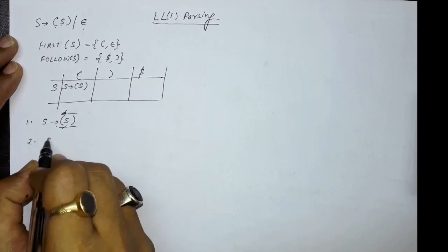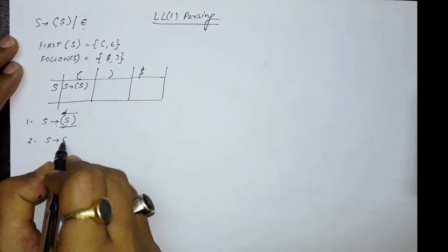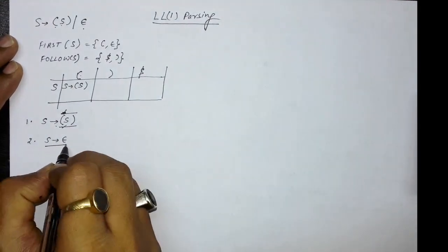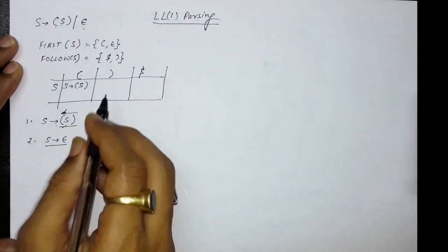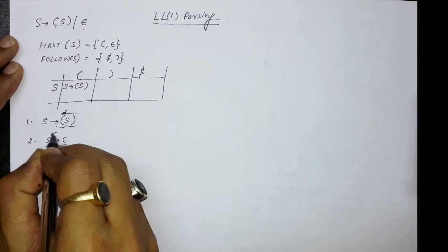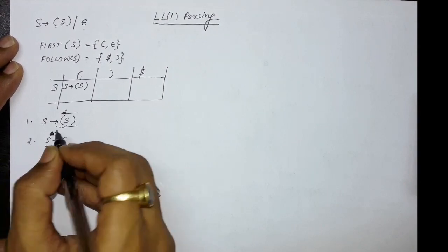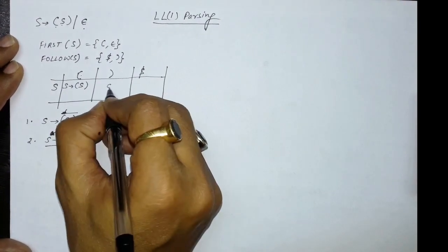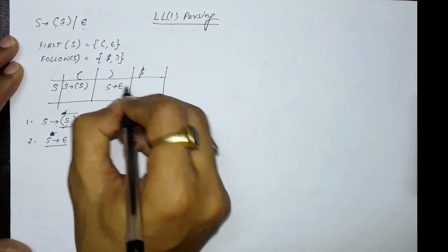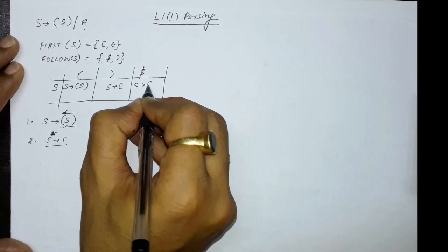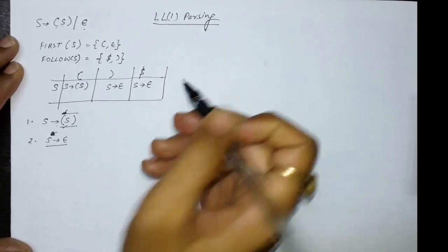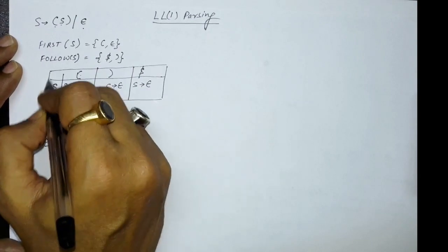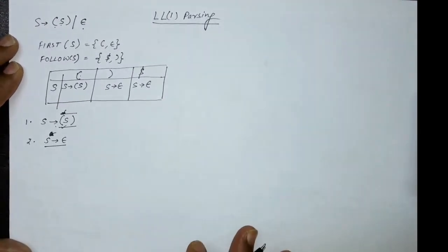Then find the production which contains epsilon. S produces epsilon is that production. You put this production S → epsilon in the table cells corresponding to FOLLOW of S. FOLLOW of S contains dollar and closing bracket, so at those columns you write S → epsilon. This is the complete LL1 parsing table, which will be used for parsing.